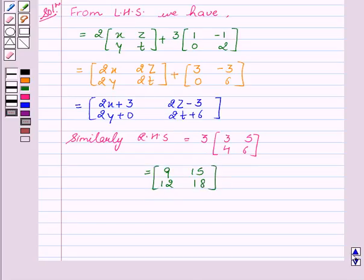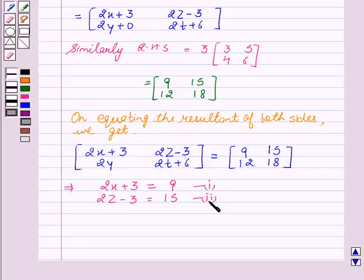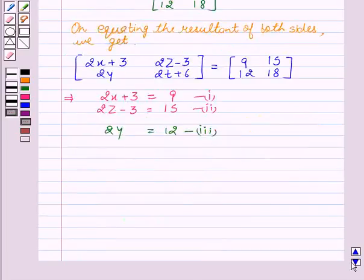Now we will equate RHS and LHS. 2x+3 equal to 9, this is our first equation. 2z-3 equal to 15 is our second equation. 2y equal to 12 is our third equation. And 2t+6 equal to 18 is our fourth equation.